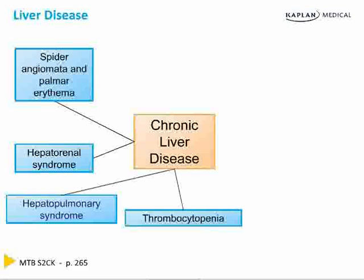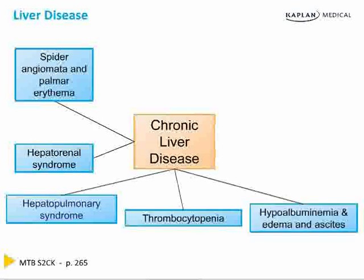There's thrombocytopenia, thought to be due to hypersplenism, with some evidence that thrombopoietin is interrupted in chronic liver disease. The liver produces albumin, so you become hypoalbuminemic — you lose oncotic pressure and develop edema and ascites.